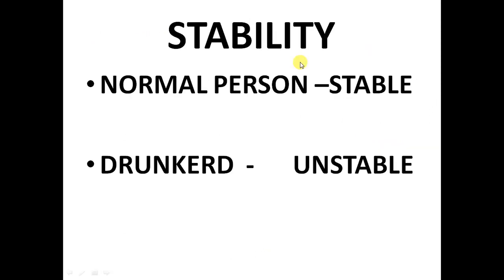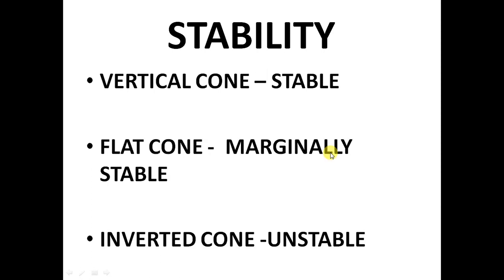Some examples for stability. A normal person is stable, but a drunkard person is unstable. A vertical cone, if you give small disturbances, it is stable, but a flat cone is marginally stable. An inverted cone is definitely unstable. When a disturbance is given, it falls down.